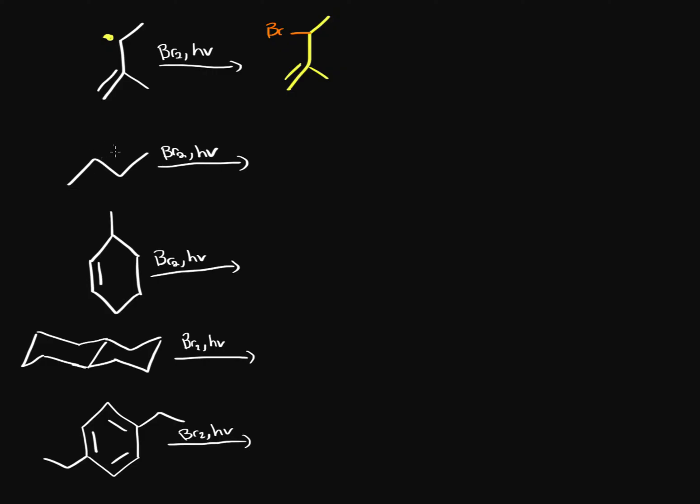Same thing goes for the second molecule. The most stable position is the secondary carbon. And you're like, what about this one? It's also secondary—don't you have two products? Well, even though these two radicals are equivalent, we have a line of symmetry, so they're exactly the same. It doesn't matter. So we're going to have just bromine sticking out of one of them.